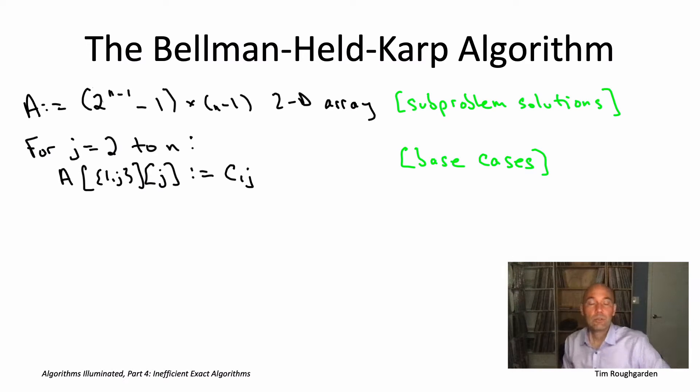The base cases correspond to the vertex subsets of size two, so it has to contain vertex one, and then there's going to be some other vertex, little j, and then little j is the only option for the endpoint as well. And so then the shortest path that goes from one to j and visits only one and j, that's got to be the direct one-hop path, and we know that's cost. It's just the cost of the corresponding edge.